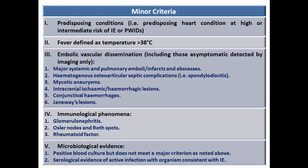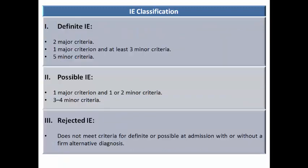The minor criteria include predisposing condition, fever defined as temperature more than 38 degrees, embolic or vascular dissemination even if asymptomatic, immunological phenomena, or microbiological evidence not fulfilling the criteria for being a major criterion.